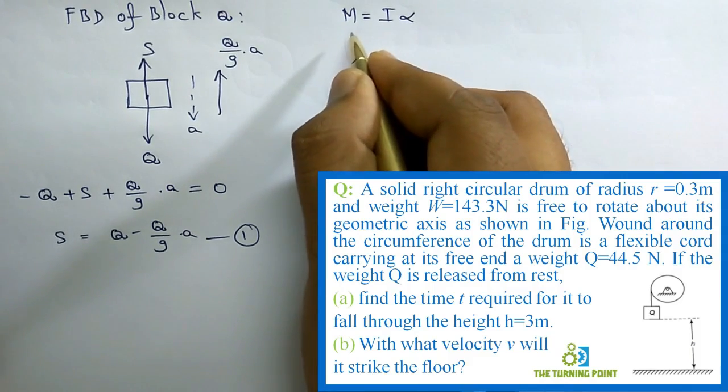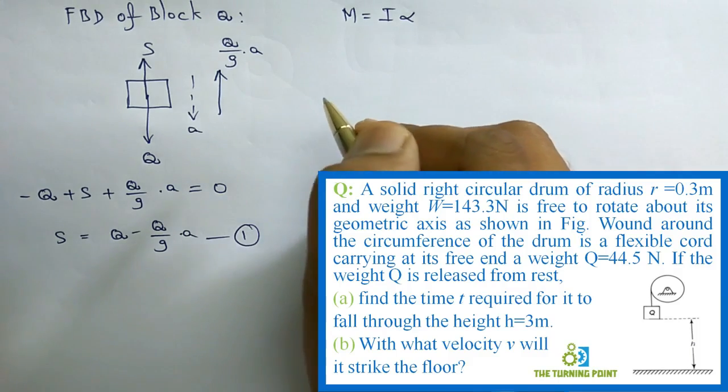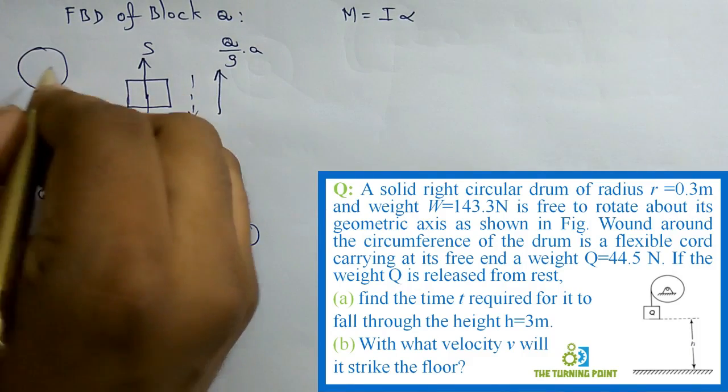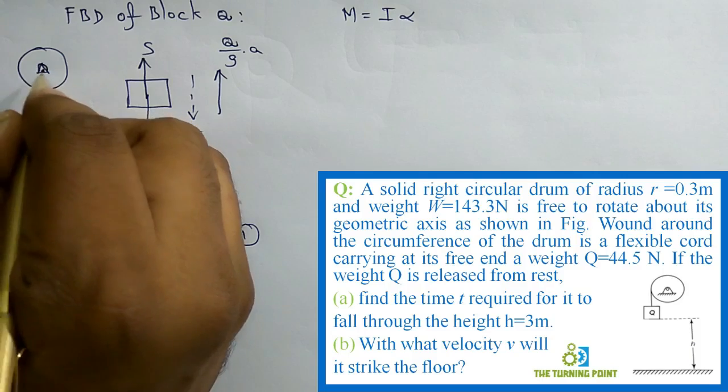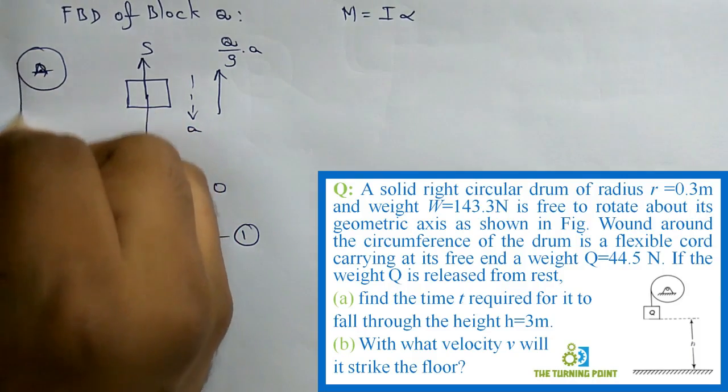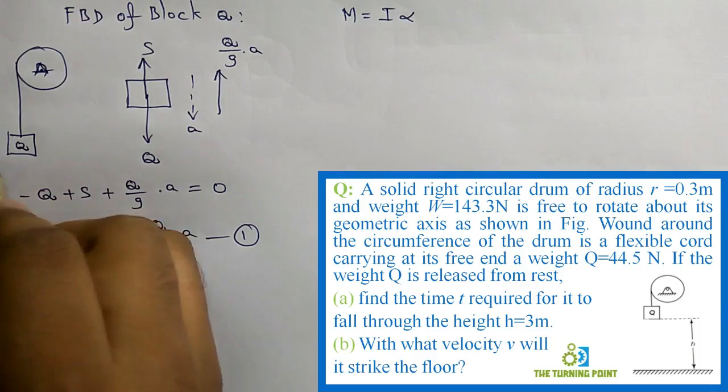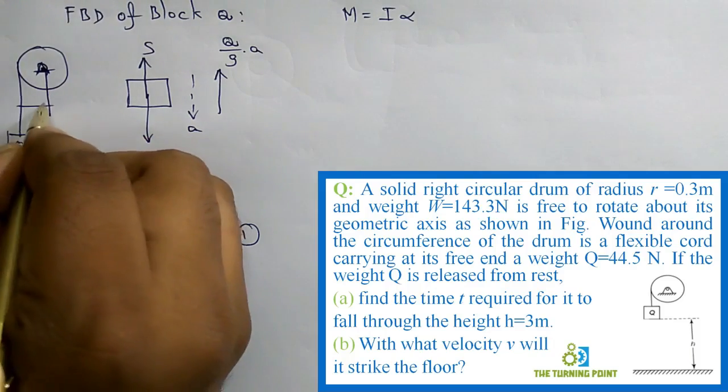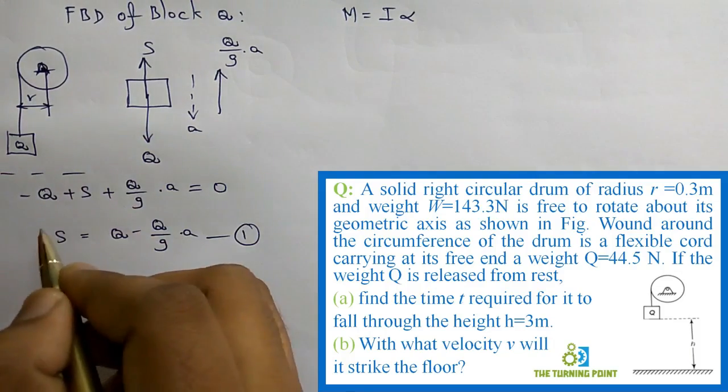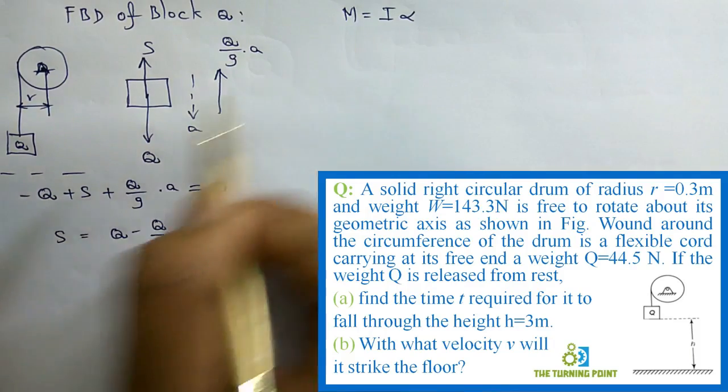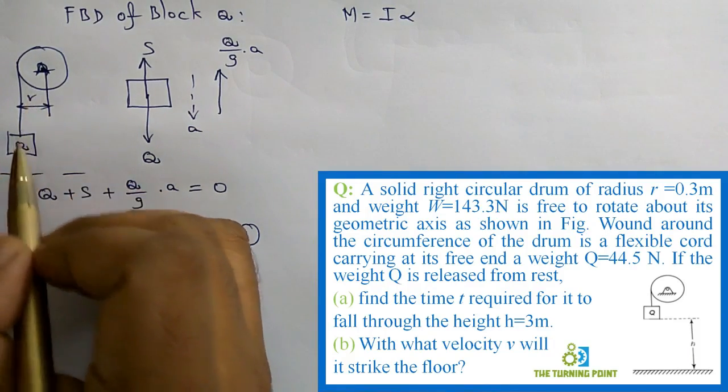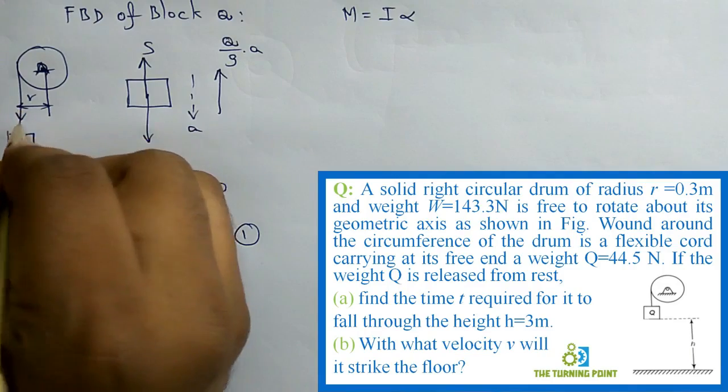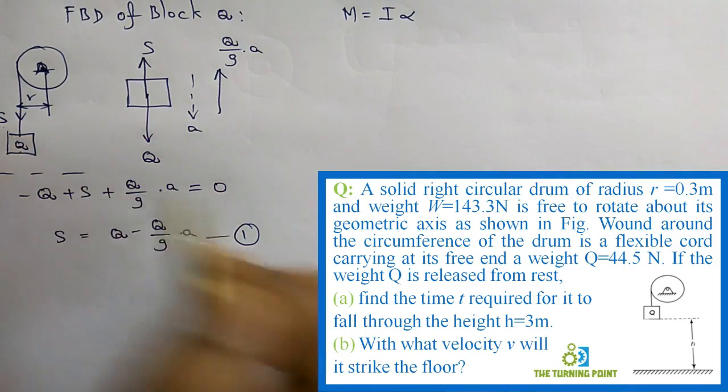Here M is moment of force, which is nothing but product of force and perpendicular distance. When you consider the given figure, it is fixed like this, and Q is attached to another end like this. Here, this distance is nothing but radius. When I consider moment as force into perpendicular distance, force is Q and the perpendicular distance up to the center is R. Sorry, along the rope it will be having tensile force S, so S into R.